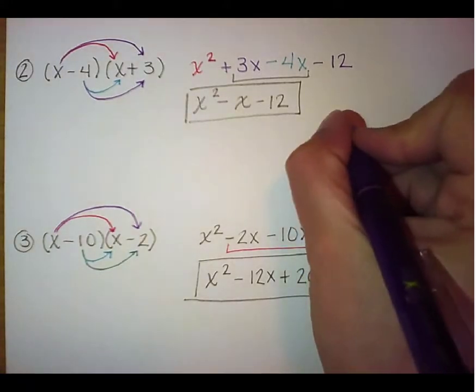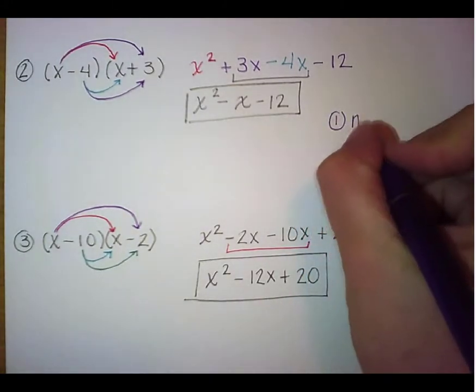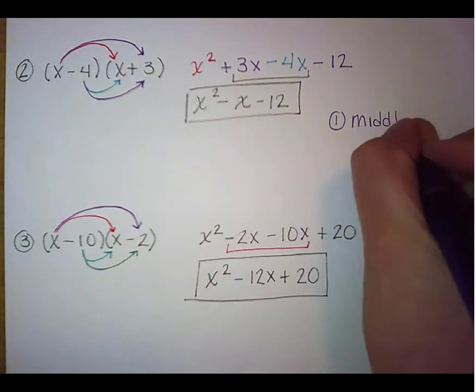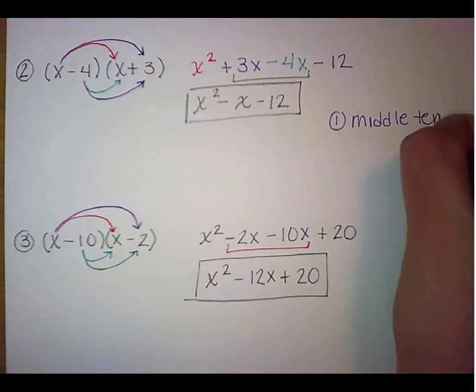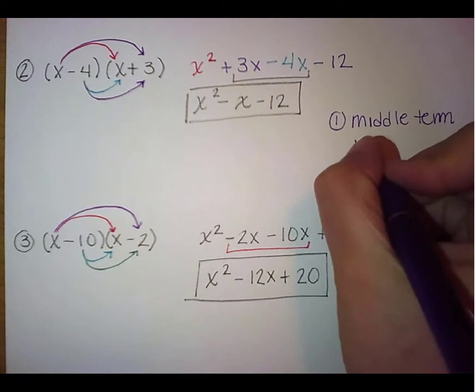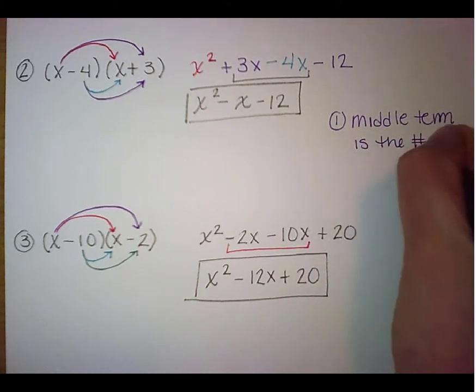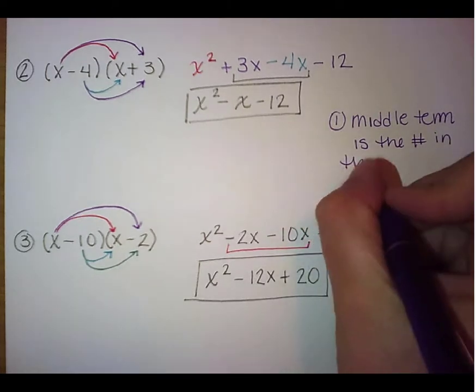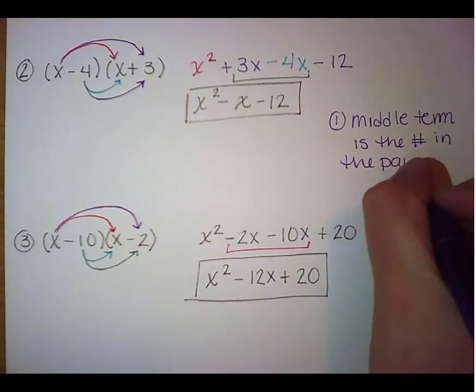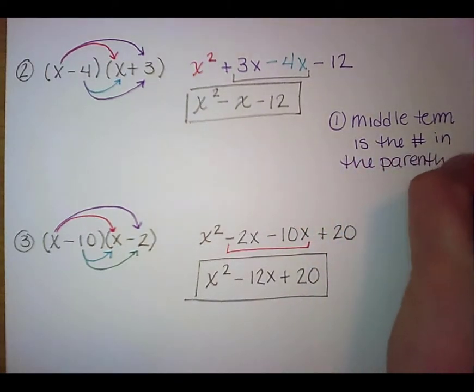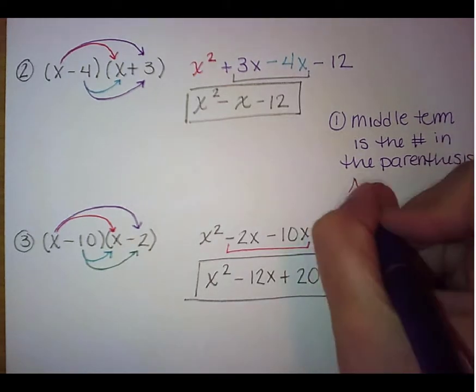The first thing is the middle term is the numbers in the parentheses added together.